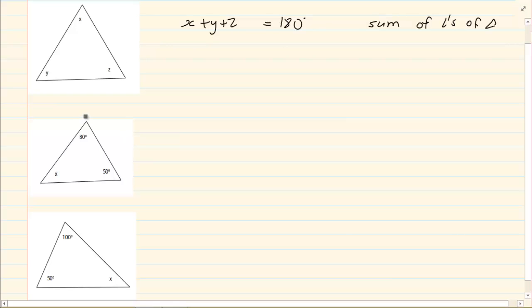Now how do we apply this rule? Let us take the following triangle. I know that 80 plus 50 plus x is equal to 180 degrees. Why? Sum of angles of a triangle.